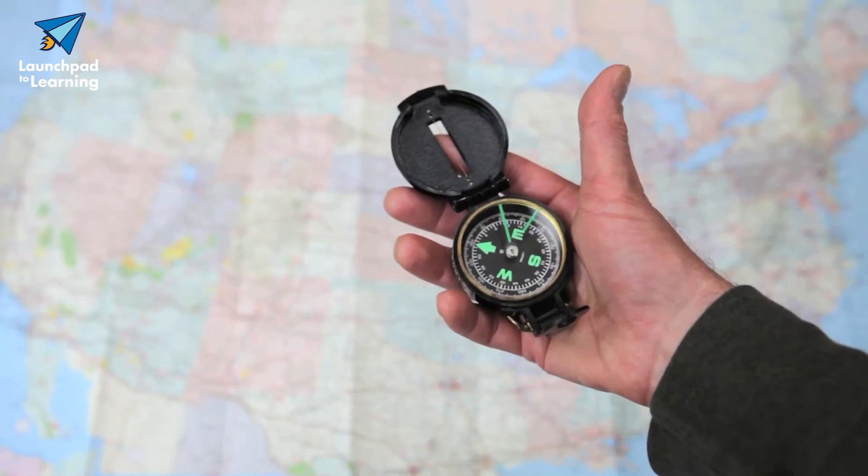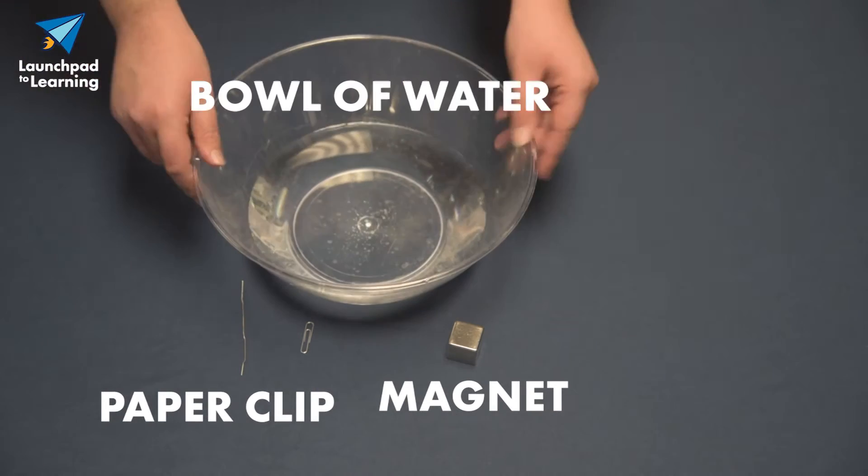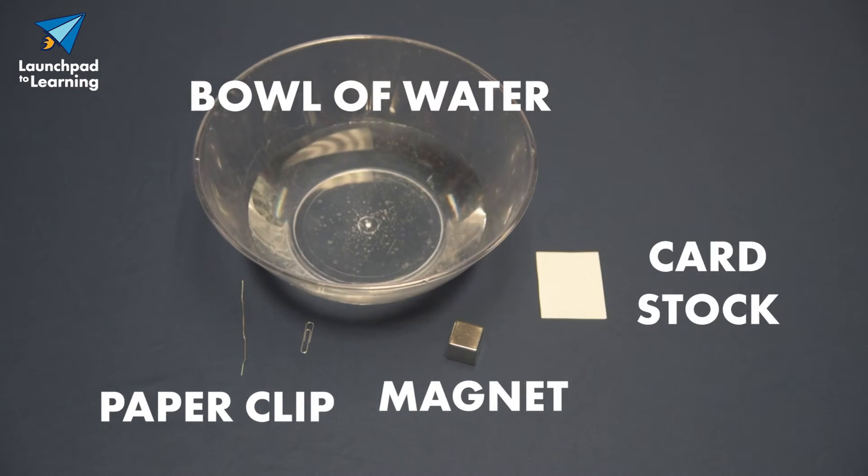We can show the earth's magnetic field by making our very own compass. For this experiment, you'll need a magnet, an open metal paper clip, a bowl of water, and a small piece of cardstock.